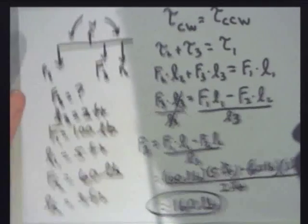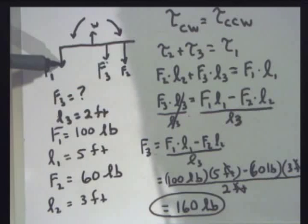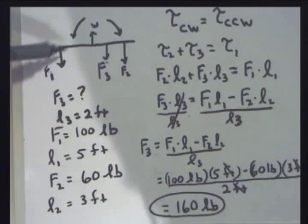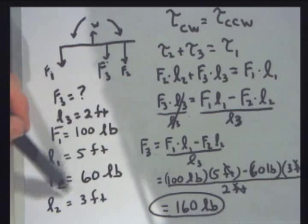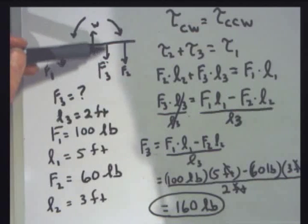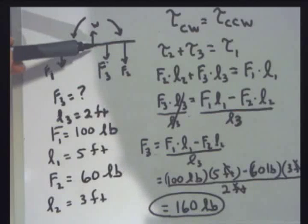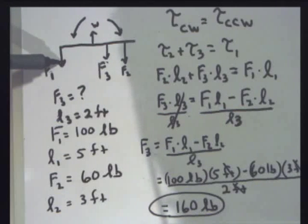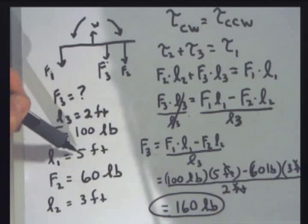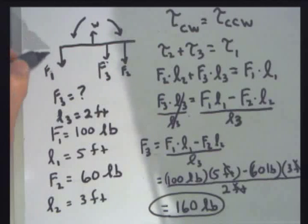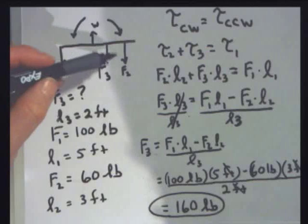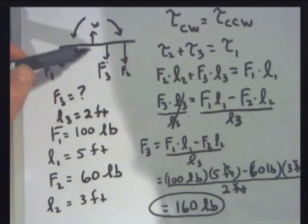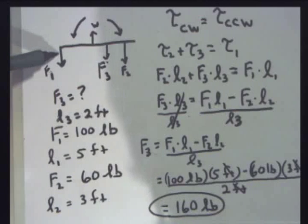So what that tells me is to balance out F1, which is 100 pounds all the way out at 5 feet, I've got this F2 on the other side, this counterclockwise torque, which is F2 60 pounds times the 3 feet, plus 160 pounds at 2 feet. If you want to check, you can figure out this torque right here. F1 times L1, 100 pounds times 5 feet. That torque is going to be 500 foot pounds. Here I've got 160 pounds at 2 feet. That's 320. Here I've got 60 pounds at 3 feet. That's 180. That's going to be 500 foot pounds. So 500 foot pounds on here is 500 foot pounds over there. They balance. That's how to do a torque problem.